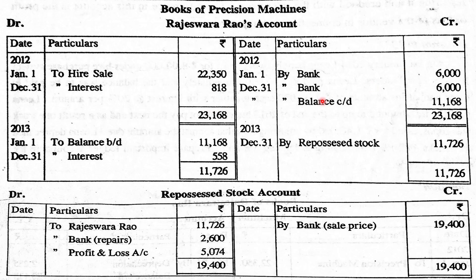First installment received: Bank Account Dr. to Rajeshwaru Rao — ₹6,000. In the next year, default occurred. Interest due entry: Rajeshwaru Rao's Account Dr. to Interest — ₹558. Then the purchaser's account is closed and transferred to Repossessed Stock Account. Journal entry: Repossessed Stock Account Dr. to Rajeshwaru Rao's Account — ₹11,726.